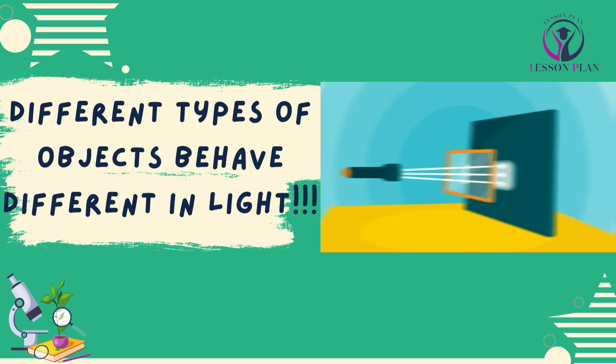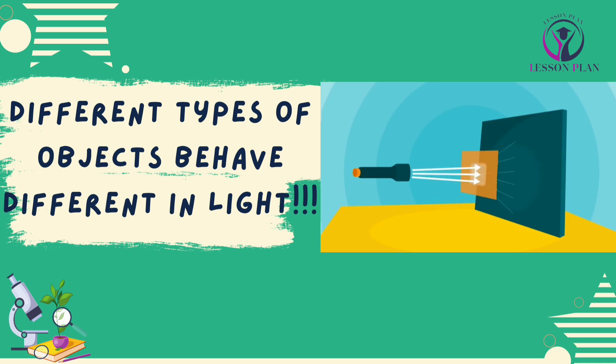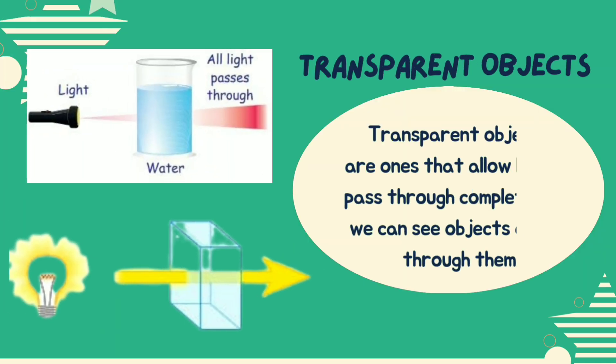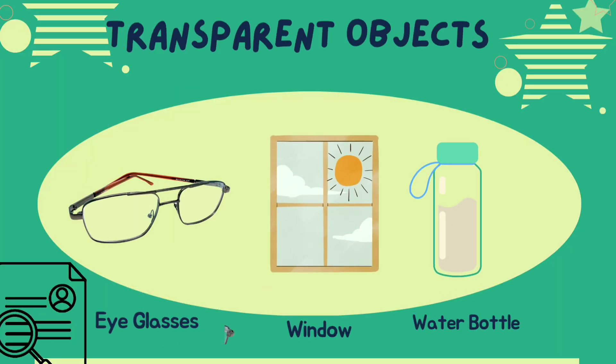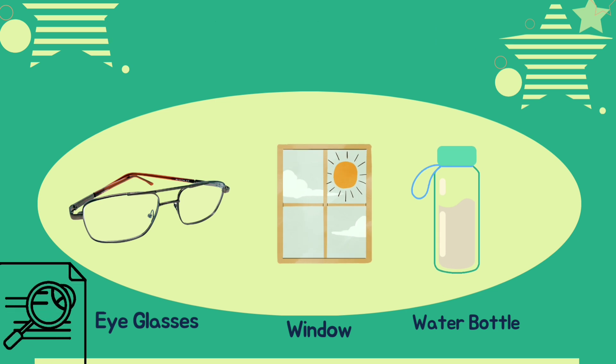Objects can be divided into three categories: transparent, translucent, and opaque. Transparent objects are ones that allow light to pass through completely, so we can see objects clearly through them. Think of a window, eyeglasses, or a water bottle.